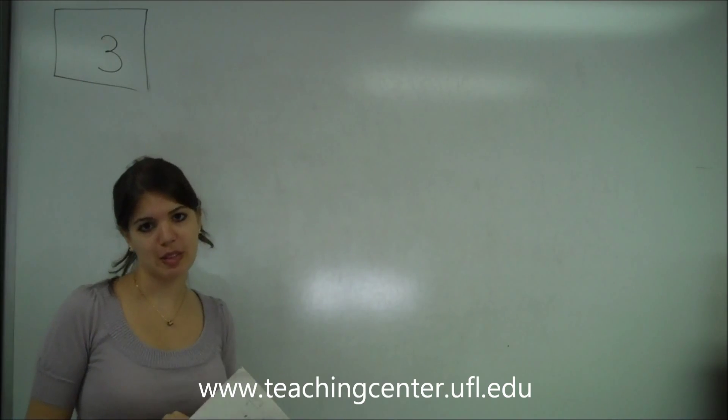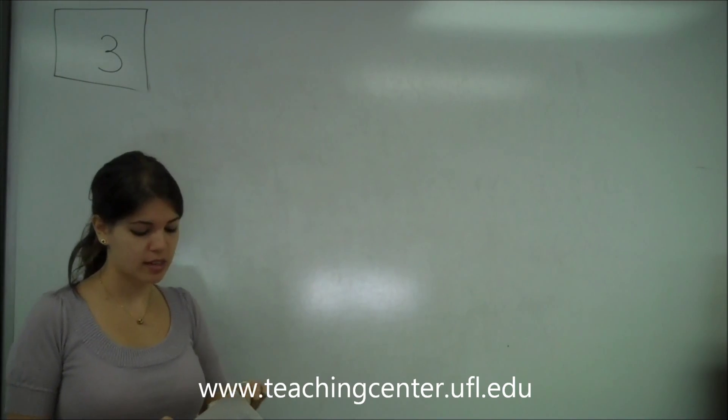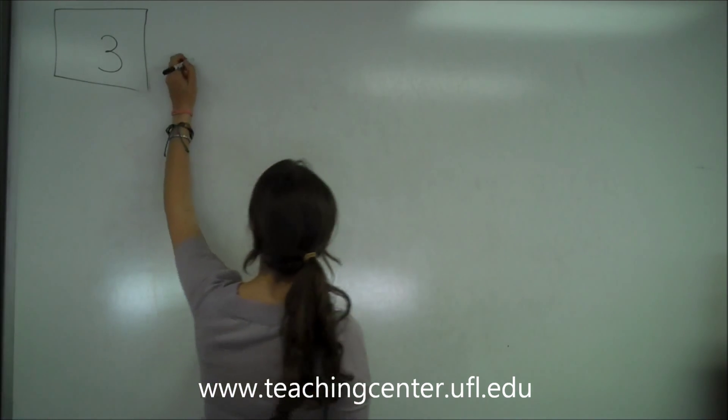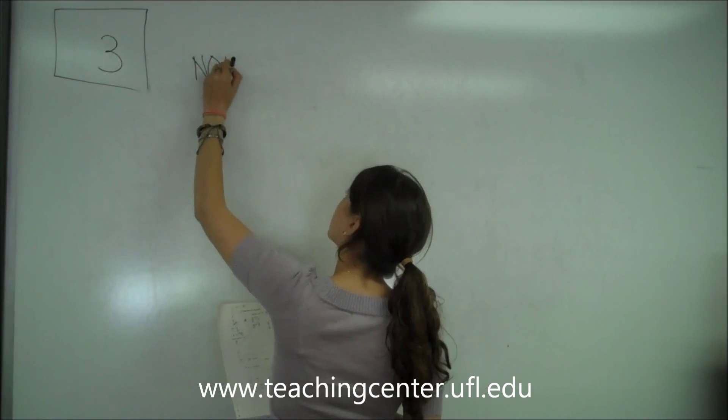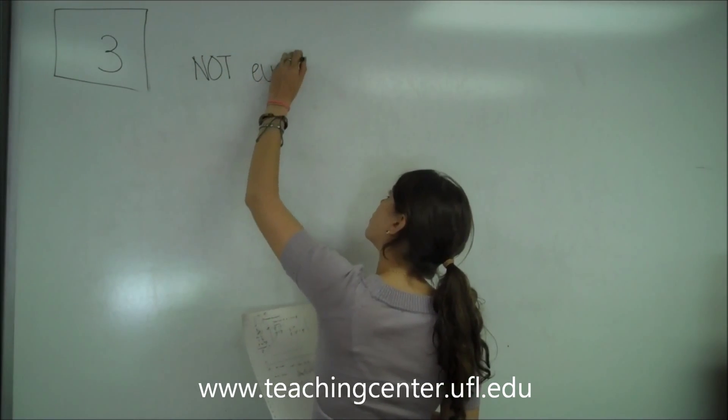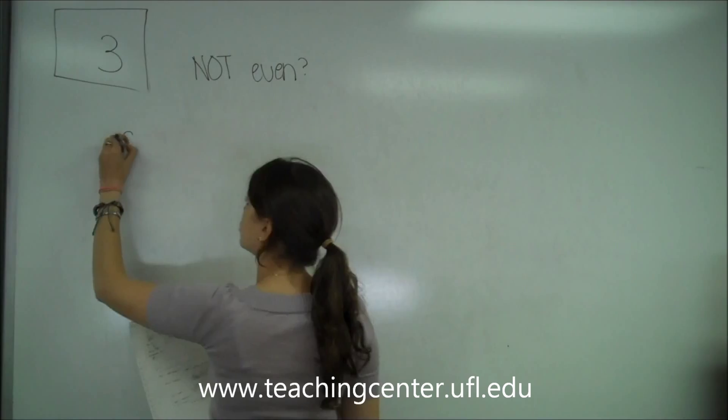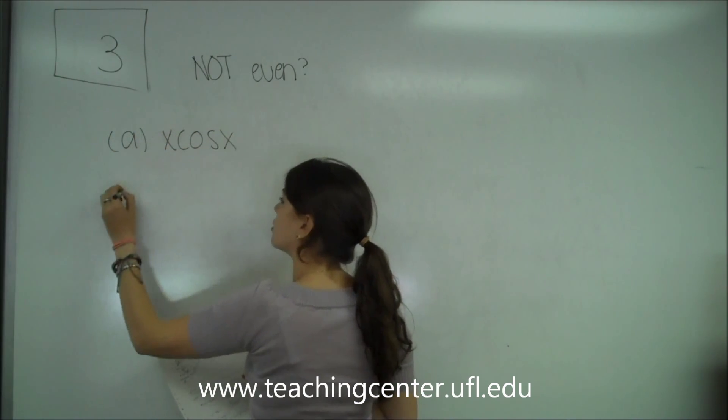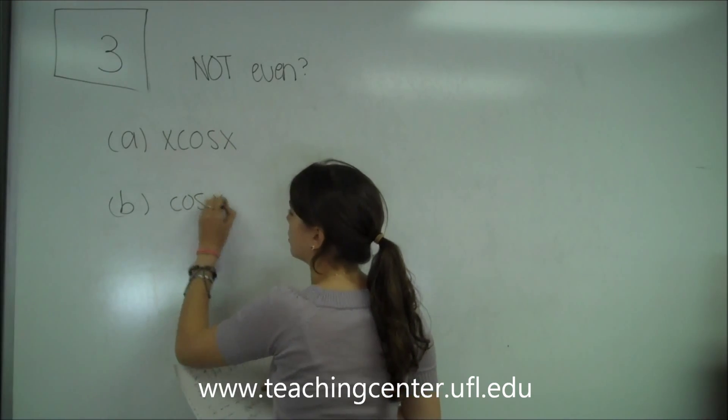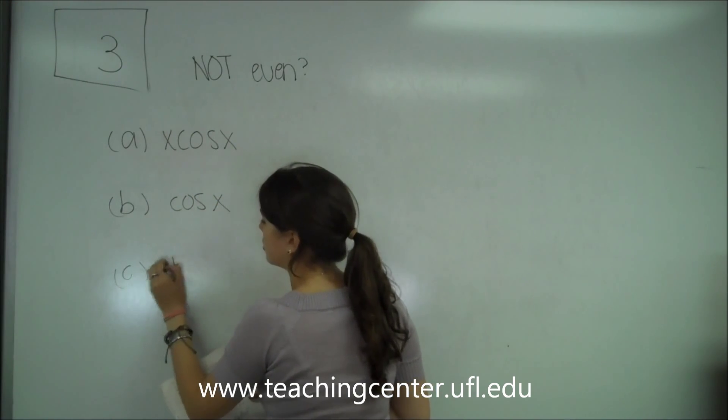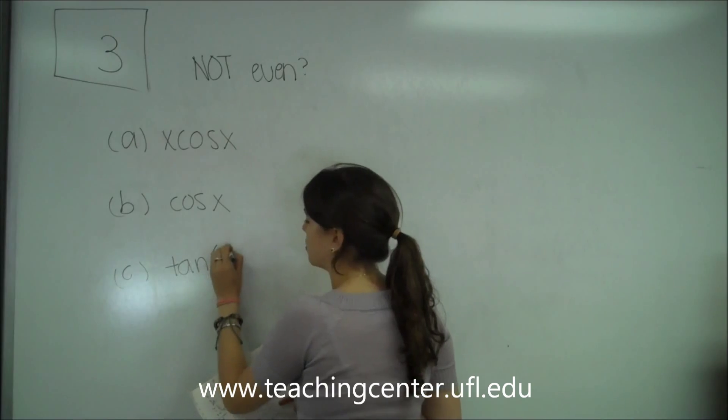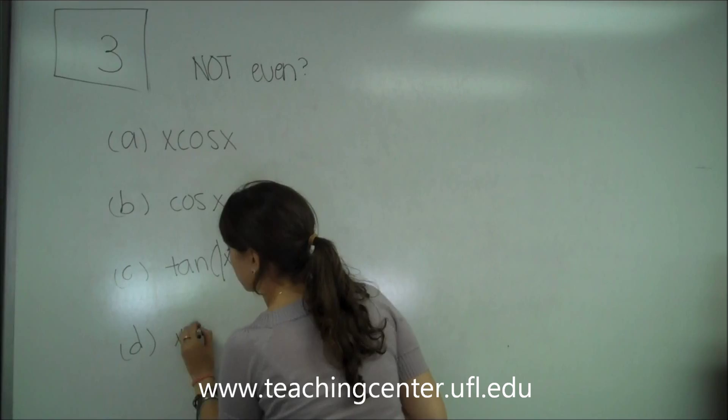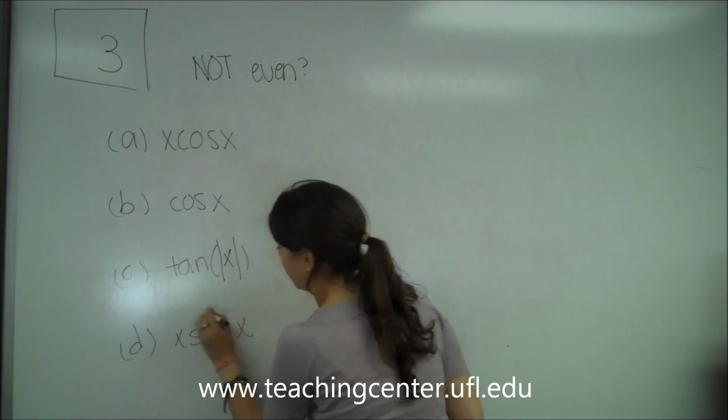This is question number 3 on the multiple choice, and it says which of the following functions is not even? Choice A is x cosine x, B is just cosine of x, C is the tangent of the absolute value of x, and D is x sine of x.